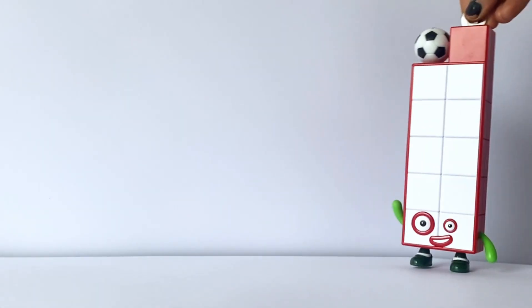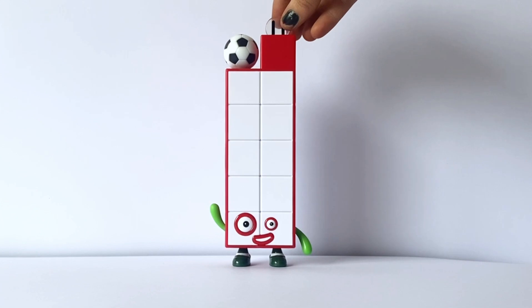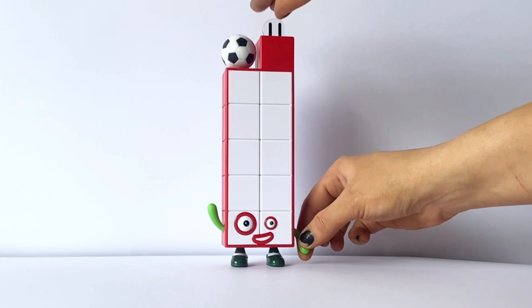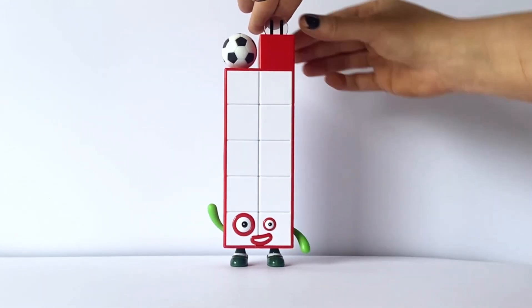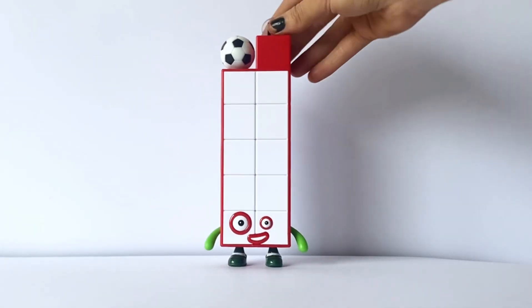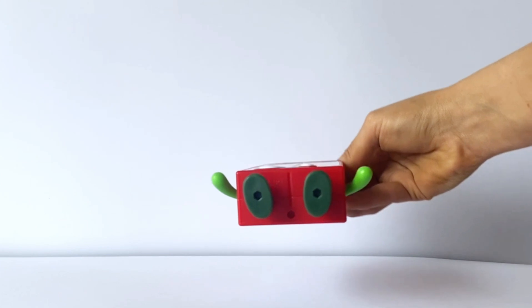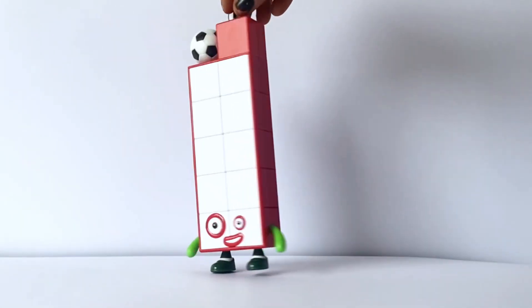So the first NumberBlock action figure we have is NumberBlock 11. NumberBlock 11 has 10 white blocks and 1 red block. All of the action figures have moving and opposable arms, so you can move them up and down. As you can see, NumberBlock 11 has holes on their feet, just like all of them, so they can stand on objects on other sets.